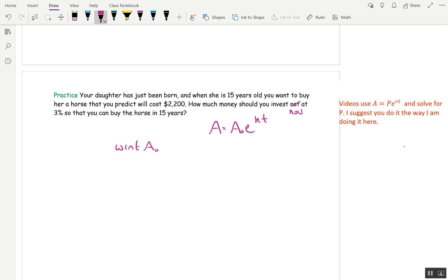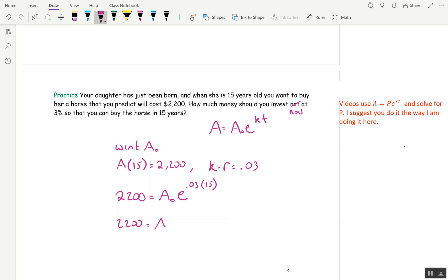Okay. So what we're looking for here is A₀. The initial amount that we're going to invest. And so what are we given? We're given that A of 15 is 2,200 because that's how much we want in 15 years. And we're giving K or R is 0.03. All right. So let's plug in what we know. We want A to be $2,200. We don't know A₀.